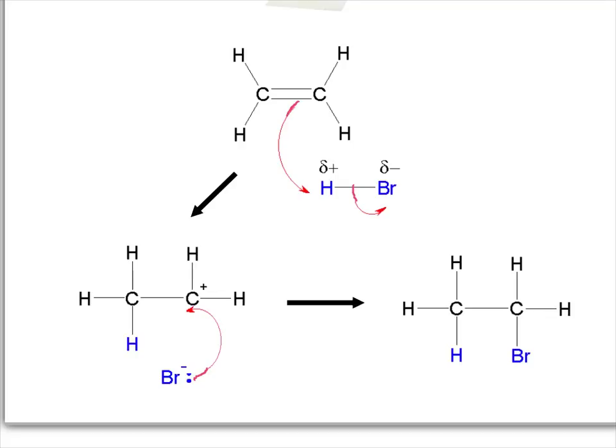Remember our definition of an electrophile as a species that can accept a lone pair of electrons. The reason why the hydrogen will accept the lone pair of electrons is because it is electron deficient slightly at this end, hence the delta plus charge.